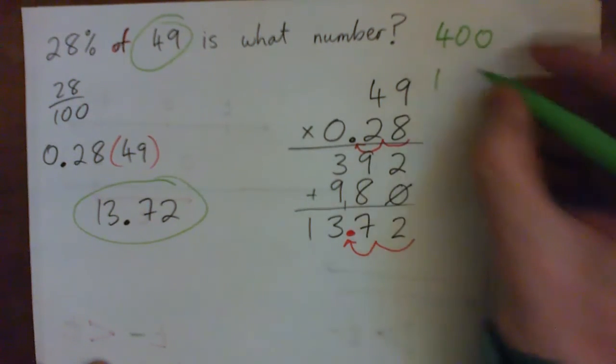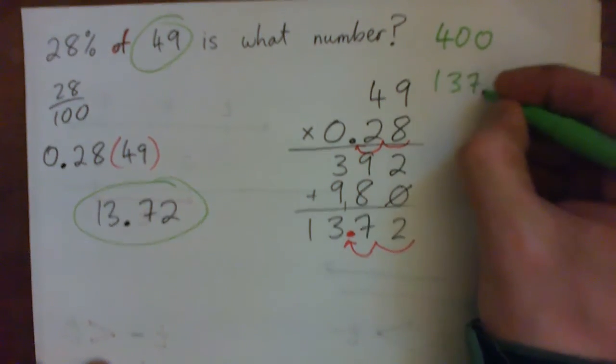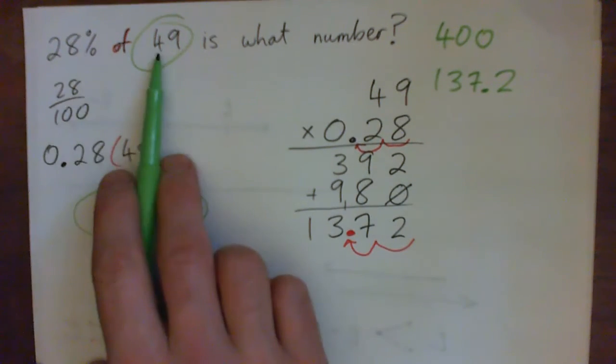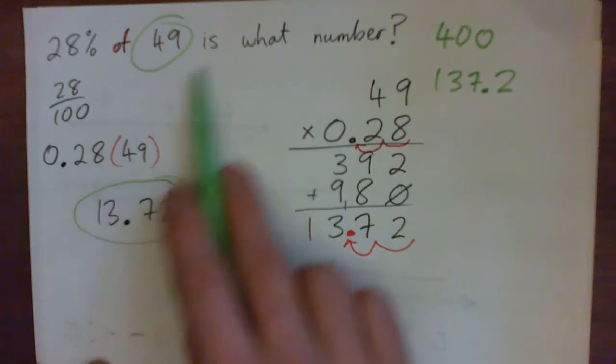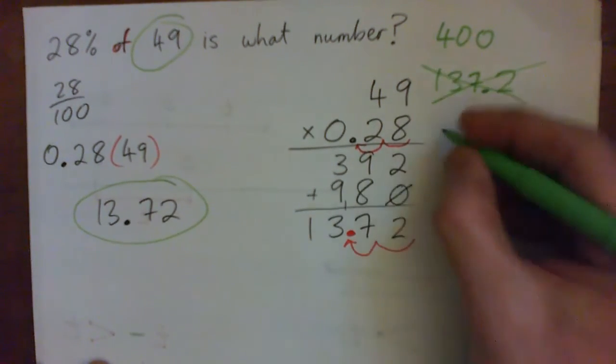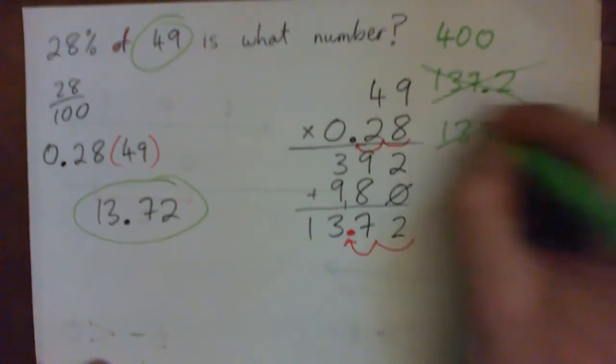Or if your answer was say, or maybe somebody made a mistake on decimal point and said, okay, it's 137.2. Does that look right? No. Do you know what I mean? So it's not going to be this, it's not going to be like 137.2 or 1372, that would also be wrong, right?